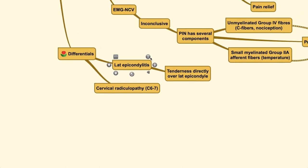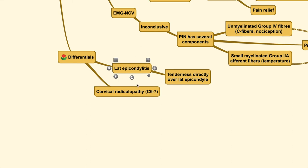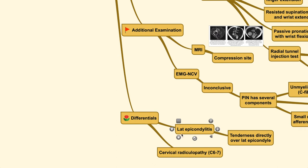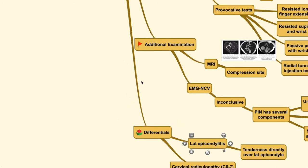For the differentials, lateral epicondylitis is one differential diagnosis — you can find pain, but it is generally located directly over the lateral epicondyle, not distal to it. For radial tunnel syndrome, the pain is usually distal to the lateral epicondyle. Another differential diagnosis would be cervical radiculopathy, but in this condition you generally find symptoms along one particular specific nerve root, which you will not find in this radial compression neuropathy.